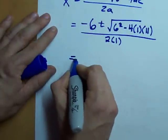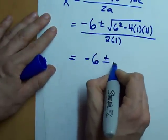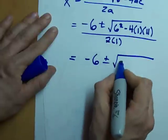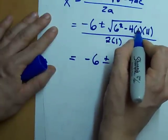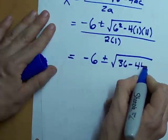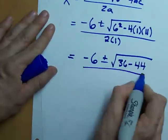So, what do I get? Negative 6 plus or minus the square root of 6 squared is 36. Minus 4 times 1 is 4 times 11 is 44. I see trouble brewing here.